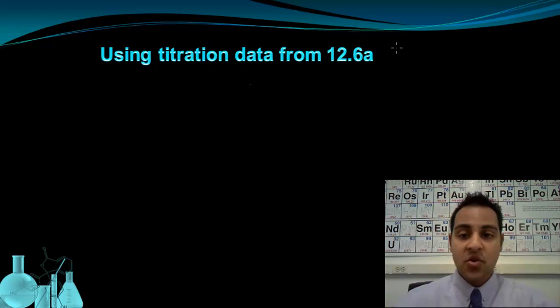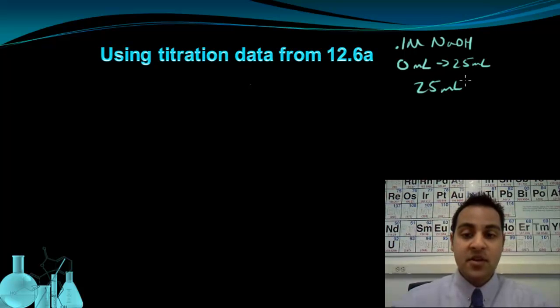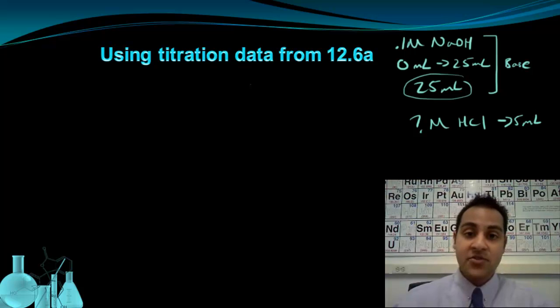In that titration, we had 0.1 molar NaOH. The burette originally read 0 milliliters and went down to 25 milliliters, so that means I used 25 milliliters of NaOH to do the titration, to neutralize the HCl. So this is the information we know about our base. And for our acid, we don't know the concentration, so unknown molarity HCl. But I do know I only added 5 milliliters of it to the beaker in the titration.